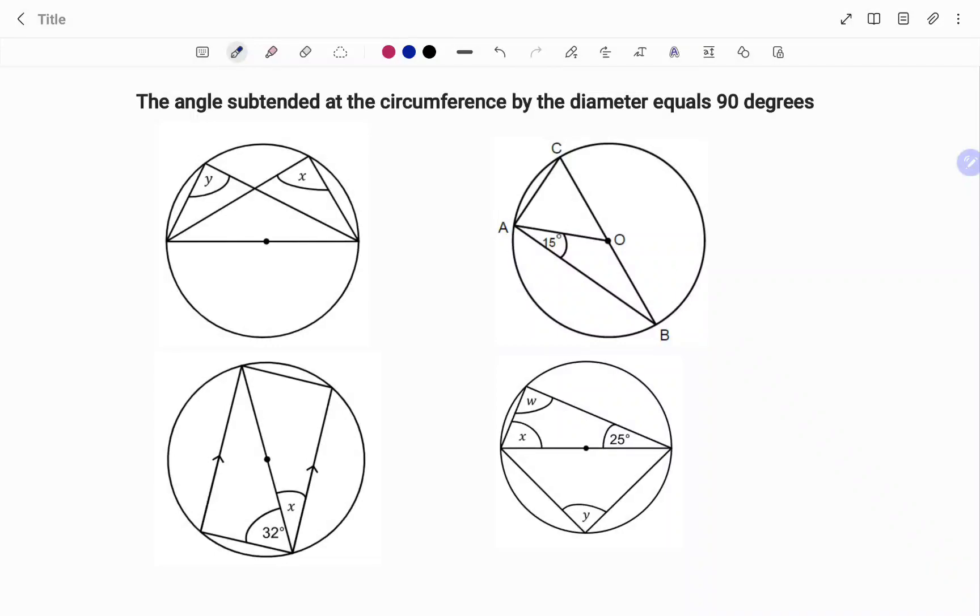Hi everyone, this is your math guru. In this video I'm going to go through a few examples that relate to the circle theorem: the angle subtended at the circumference by the diameter equals 90 degrees. Please don't forget to click on the like and subscribe button below for more easy to understand math concepts.